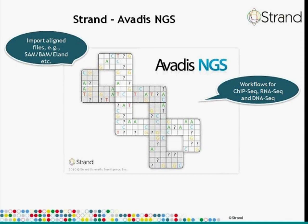The starting point for analysis in Avadis NGS are aligned files. These are typically SAM, BAM, or ELANT files generated by Illumina platform aligners. Once these files are imported into the specific experiment, you can carry out either ChIP-seq analysis, RNA-seq analysis, or DNA-seq analysis. In a couple of months, we will also have support for small RNA analysis.